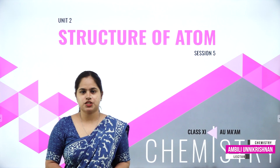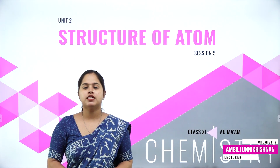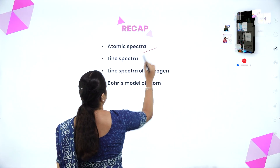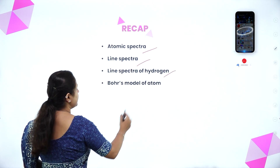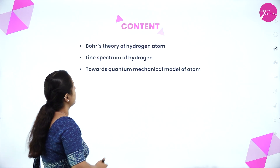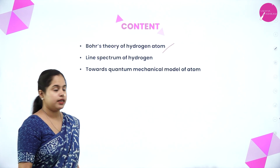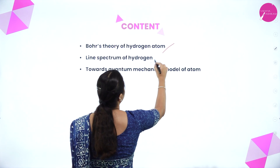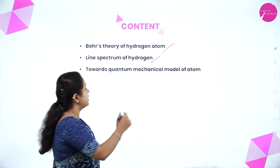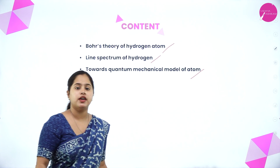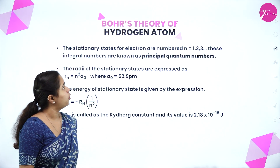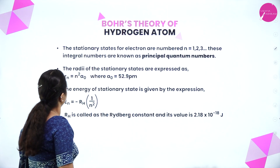Hello everyone, this is Ambali Unikrishnan from the Department of Chemistry, Vidyashram School of Excellence, Mysore. In the last class we discussed about atomic spectra, line spectra, and especially the line spectrum of hydrogen and the postulates of Bohr's model of atom. In today's session we will be discussing Bohr's theory for hydrogen atom, how to explain the line spectrum of hydrogen using Bohr's theory, and developments leading to the quantum mechanical model of atom.